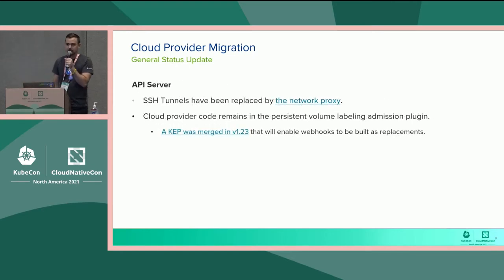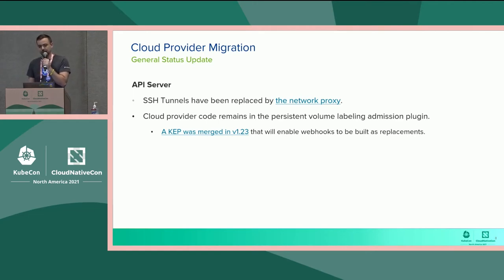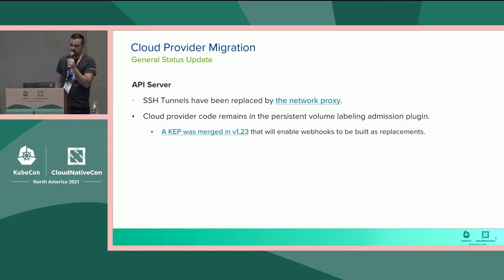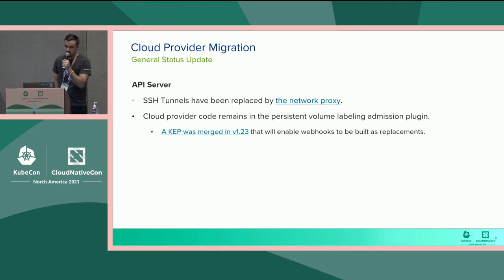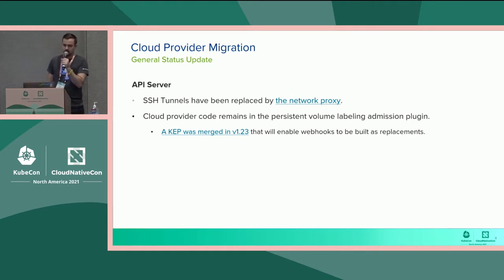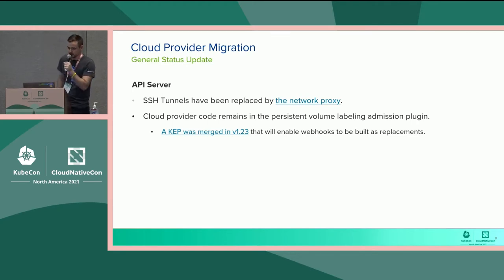Another component that is relevant here is the API server, and the API server has two parts of the code that are cloud-related. The first is the SSH channel functionality, which as of 1.22 has already been dropped and is replaced by the network proxy project, also known as the connectivity agent. If you have any questions about that, Walter is your guy.